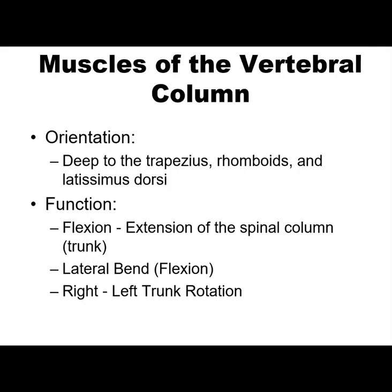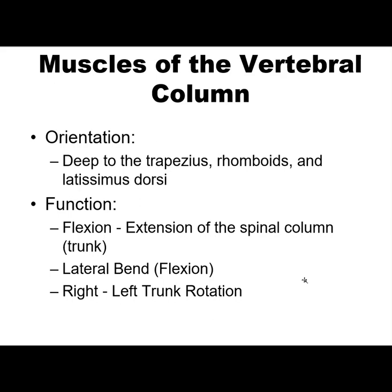Now let's review the muscles of the vertebral column. Note the orientation — they are deep to the trapezius, the rhomboids, and the latissimus dorsi. The functions of the spine, as we reviewed, are flexion and extension in the sagittal plane, lateral bend or lateral flexion in the frontal plane, and axial rotation right and left in the horizontal plane. The muscles we're going to talk about in this video are posterior muscles, so based on line of pull, they are responsible for extension of the spinal column.